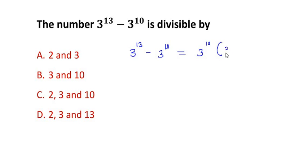Here it becomes 3 to the power of 3 minus 1. If you look, 3 to the power of 10 times 3 to the power of 3 gives you 3 to the power of 13 minus 3 to the power of 10.